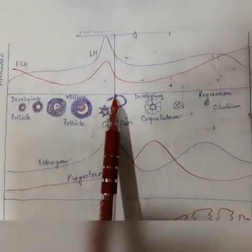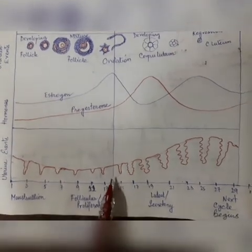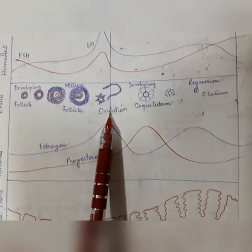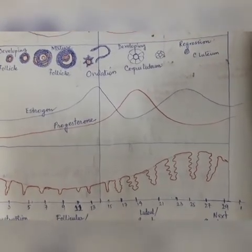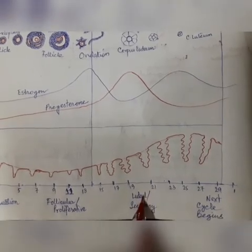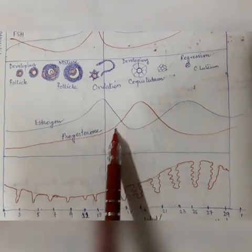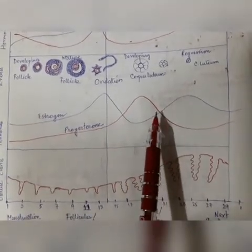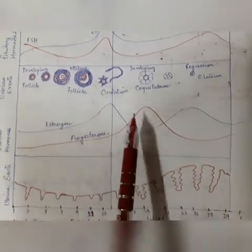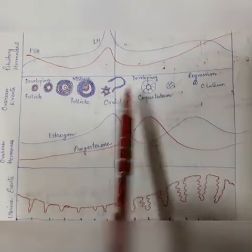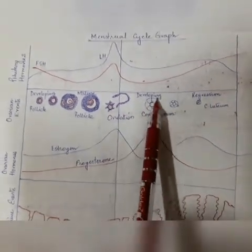Ovulation occurs approximately on the 14th day of the cycle. The next phase is the luteal or secretory phase — also known as the progesterone phase — because there is a rise in progesterone secretion during this phase. It starts after ovulation. The ruptured Graafian follicle begins transforming into the corpus luteum, and simultaneously there is a change in the endometrium wall with a rise in endometrial structure.